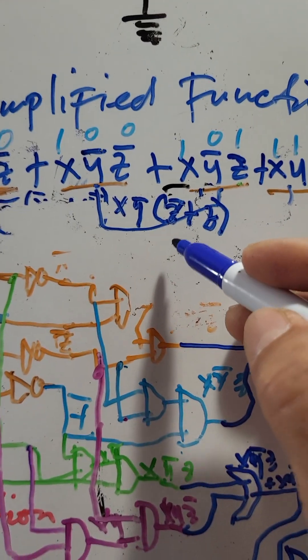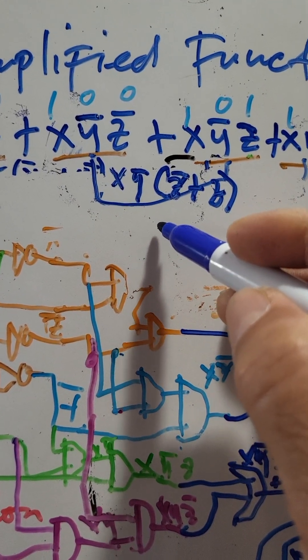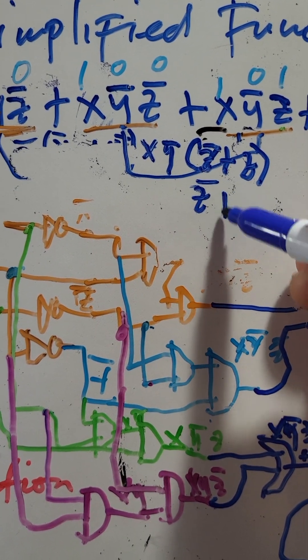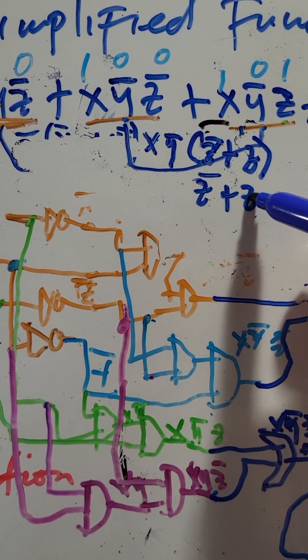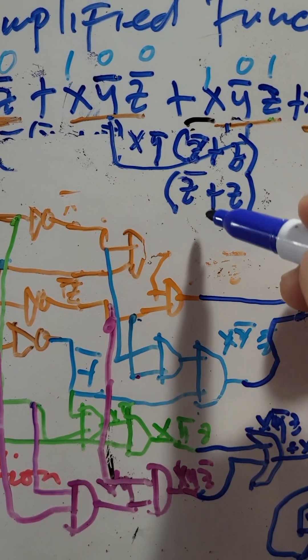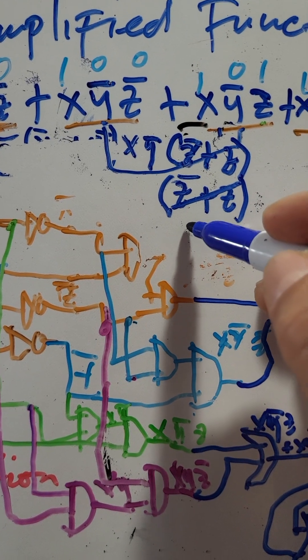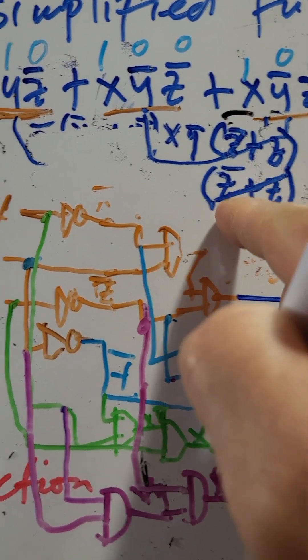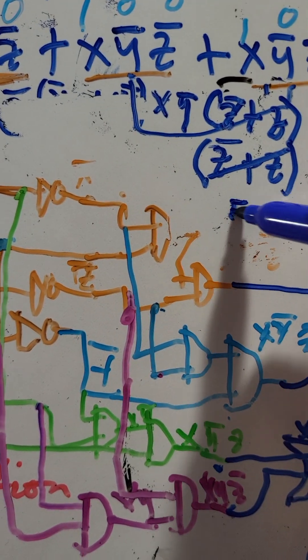Now, in Boolean laws, Z bar plus Z, because the common is X Y bar, we can cancel this one according to Boolean laws. This is equal to 1. This is equal to 1.